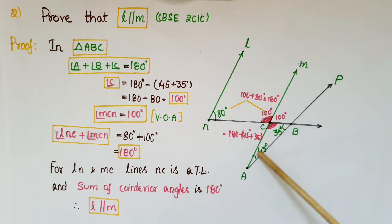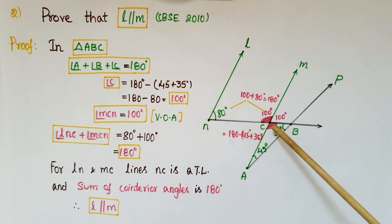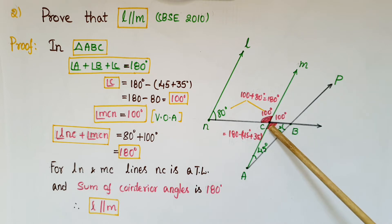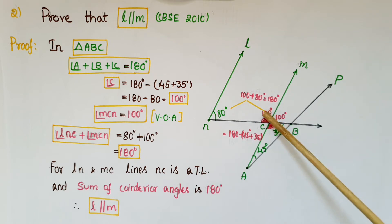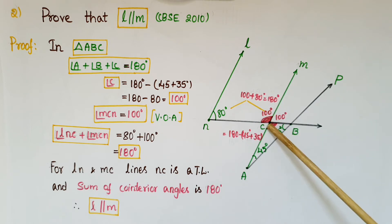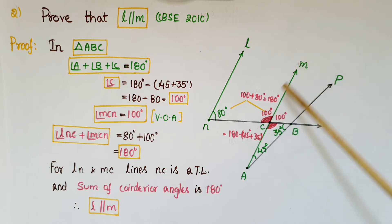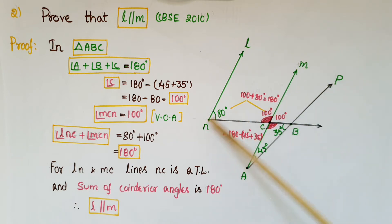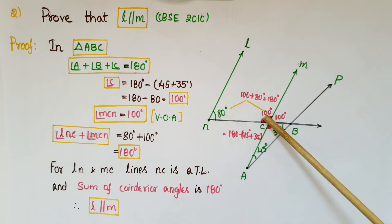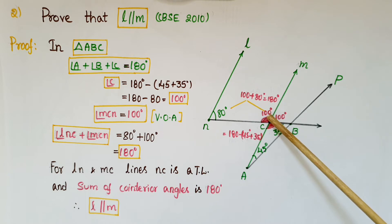Angle C equals 180 minus 80 degrees, which is 100 degrees. Now, these two angles are vertically opposite angles, so angle MCN is also 100 degrees, because vertically opposite angles are equal.